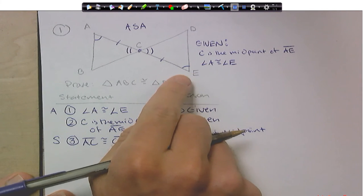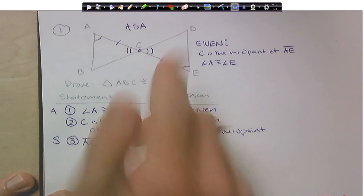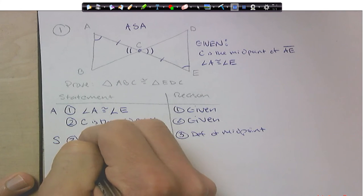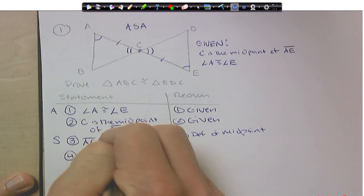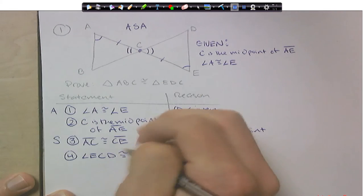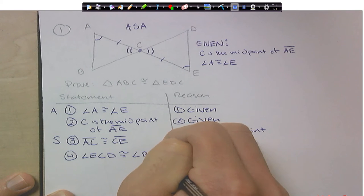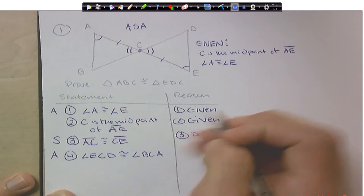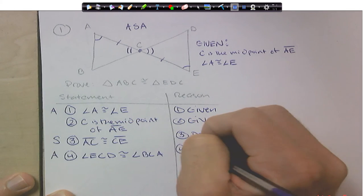Now, we can't write C. We have to use the point E, C, D. So you can say angle E, C, D is congruent to, and I can go B, C, A. And that's another angle, and we can prove that by vertical.